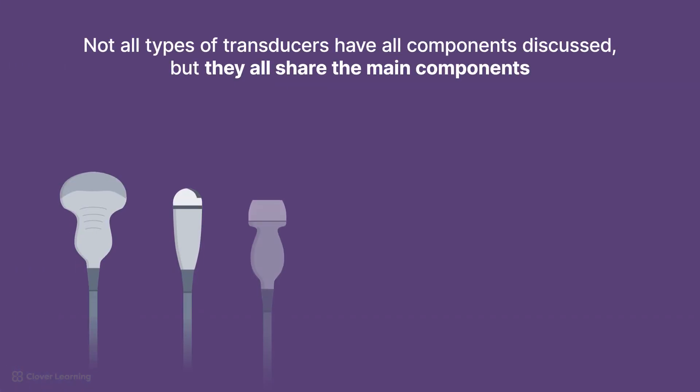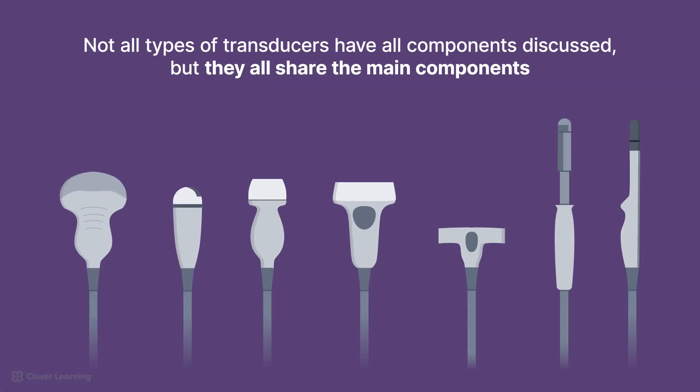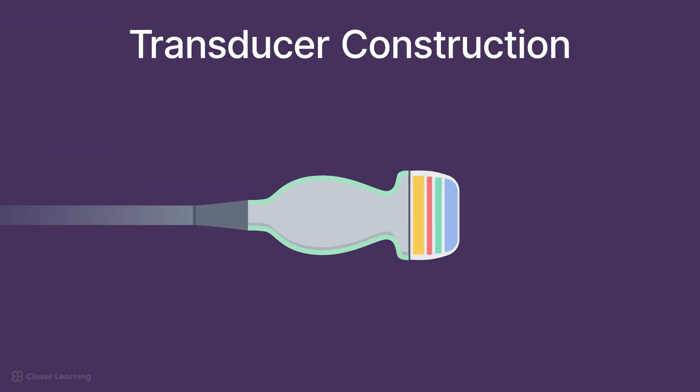There are several different types of transducers, which we will discuss in a different video, that may look different and not have all of the components discussed here, but they all share the main components for creating the ultrasound signal. Now, let's discuss the basic components of transducer construction. There are seven main components.